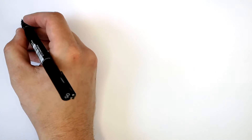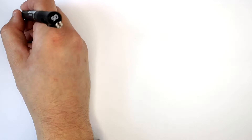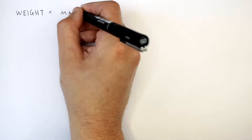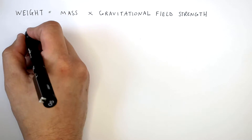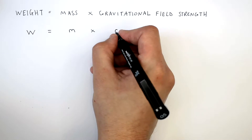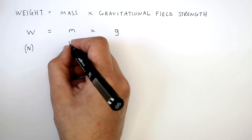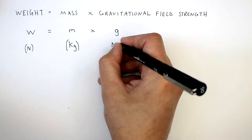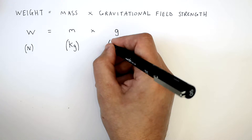The equation that links weight, mass, and gravitational field strength is weight equals mass times gravitational field strength, which is W equals M times G, where the unit of weight is newtons, the unit of mass is kilograms, and the unit of gravitational field strength is newtons per kilogram.